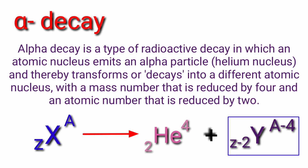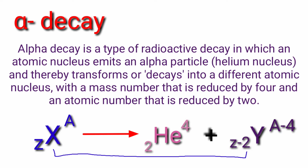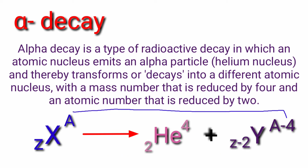After the alpha particle is emitted, the atomic number will decrease by 2 from the original nucleus and the atomic mass will decrease by 4. This new nucleus formed is our daughter nuclei.